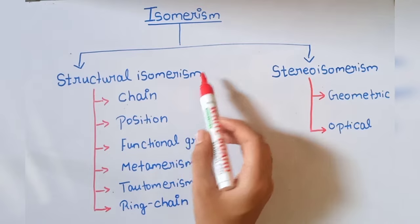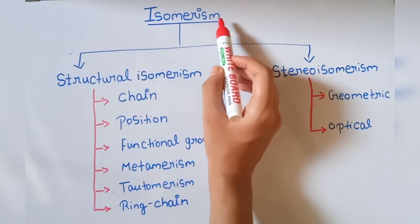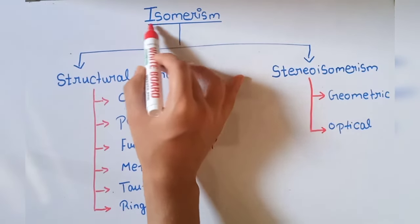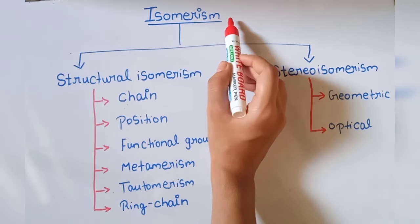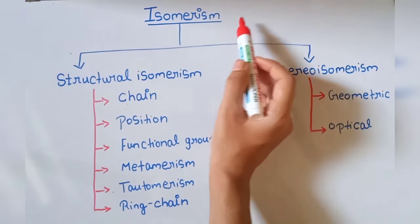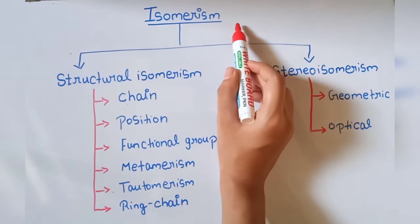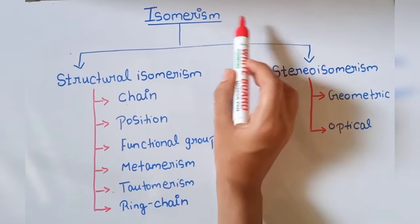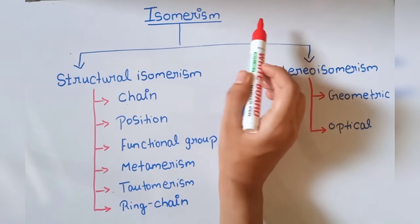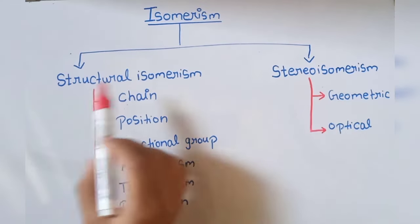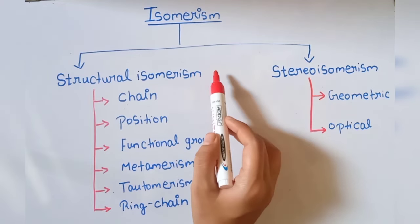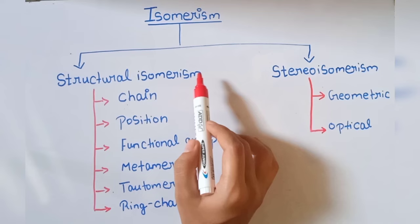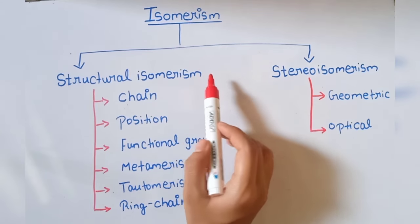Isomerism — 'iso' means same. So isomerism means two or more compounds have the same molecular formula but their physical and chemical properties will be different.